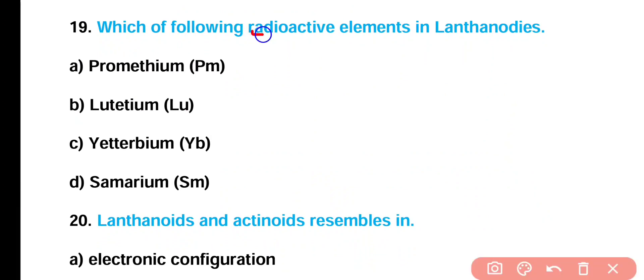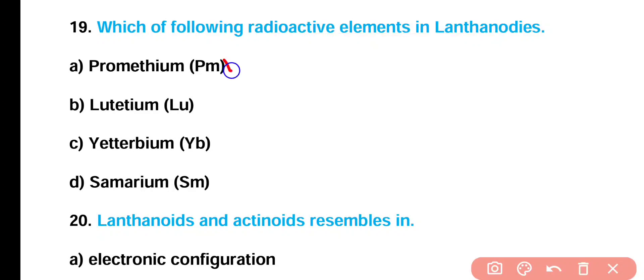Question number 19: Which of the following is a radioactive element in lanthanides — promethium, lutetium, ytterbium, or samarium? Correct answer is option A. Promethium is a naturally radioactive element, while the other lanthanides are not radioactive.